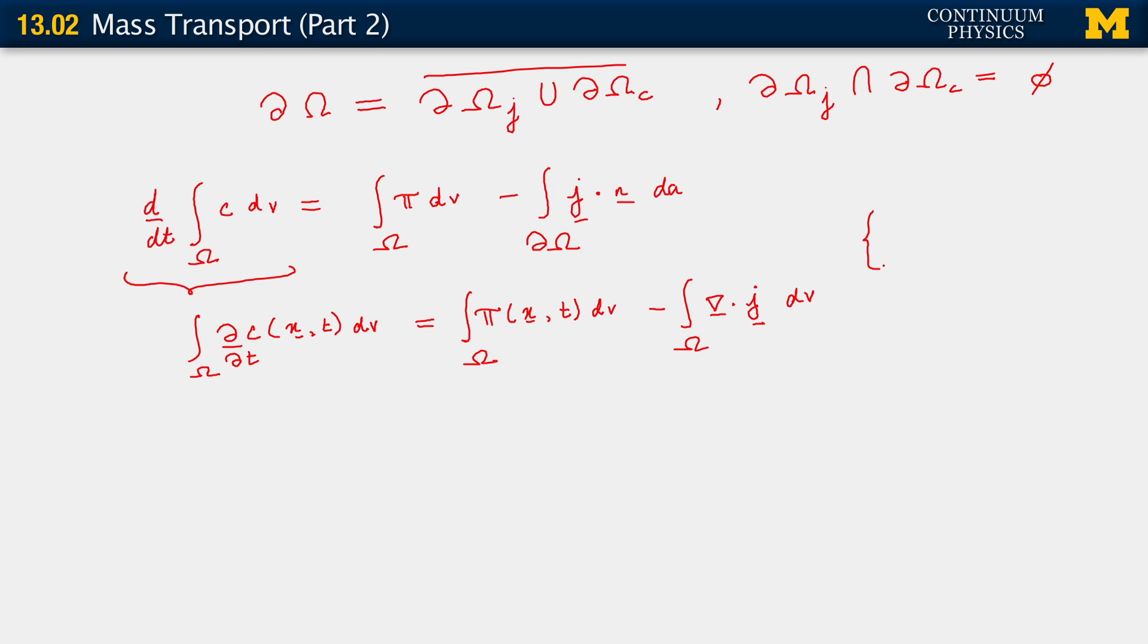And I'll mention here that what we've done is we've applied the Gauss divergence theorem applied to j, the flux vector, which is a vector, of course. We've just reminded ourselves that that's a vector.